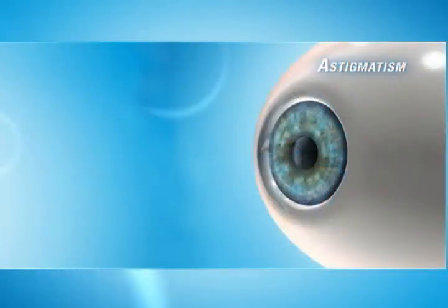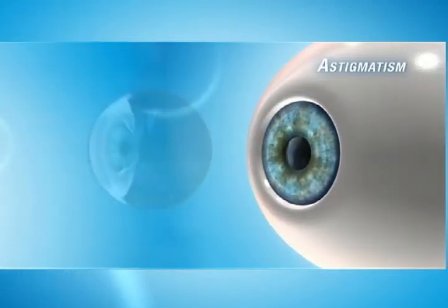Astigmatism occurs in nearly one-third of all nearsighted patients. The normal cornea is round, like a basketball.